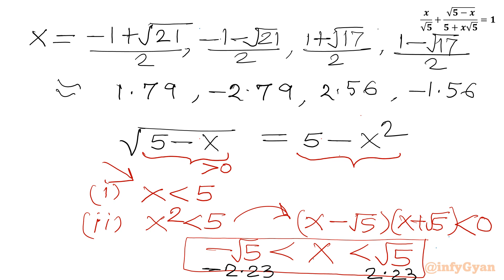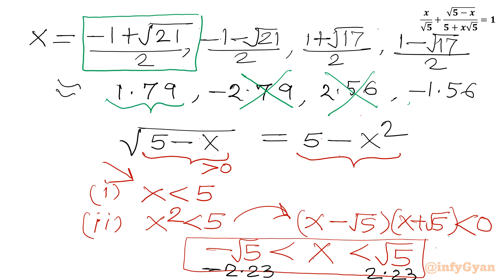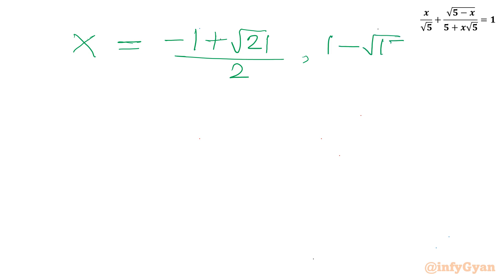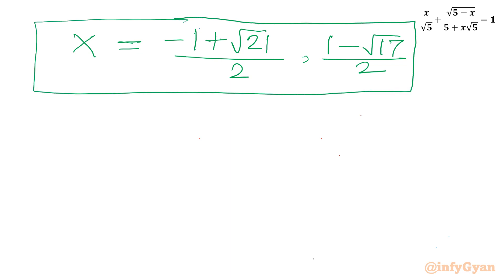Checking which solutions lie in the interval minus 2.23 to 2.23: the values approximately 2.56 and minus 2.79 are outside, so they are rejected. The accepted solutions are x equals minus 1 plus root 21 over 2, and x equals 1 minus root 17 over 2. This brings the end of the video — do not forget to like, share, and subscribe. Bye-bye, take care!